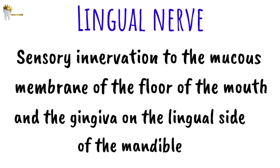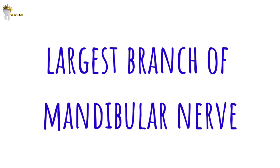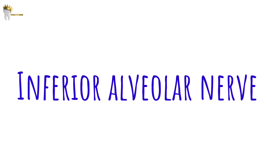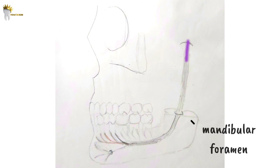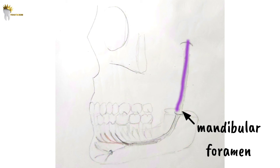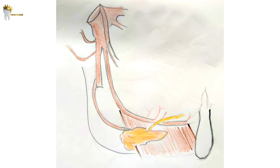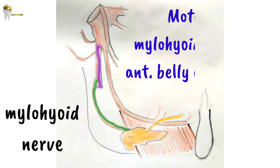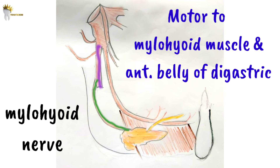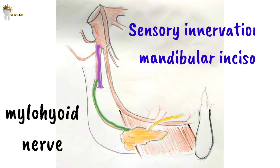The lingual nerve also provides sensory innervation to the mucous membrane of the floor of the mouth and the gingiva on the lingual side of the mandible. The largest branch of the mandibular nerve is the inferior alveolar nerve. It is also medial to the lateral pterygoid muscle at first, then enters the mandibular canal through the mandibular foramen. Before entering the mandibular canal, the mylohyoid nerve branches from it. The mylohyoid nerve is a mixed nerve — motor to the mylohyoid muscle and the anterior belly of the digastric, and sensory to the mandibular incisors.